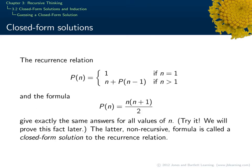We begin by talking about the very first recurrence relation we discussed at the beginning of the last video — p of n. When n is 1, we get p of 1 equals 1. For larger values of n, we take the previous value of p and add n. In the course of discussing this recurrence relation, we probably saw that p of n is really counting the sum of the first n numbers: 1 plus 2 plus up through n minus 1, and then n.